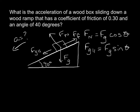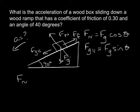We know our perpendicular forces are going to cancel each other out. The force of gravity is broken up into its parallel and perpendicular components. The perpendicular component of gravity cancels out the normal force because the box isn't jumping off the ramp or sinking into it. So our net force is in the parallel direction.